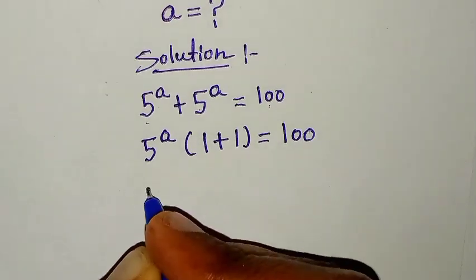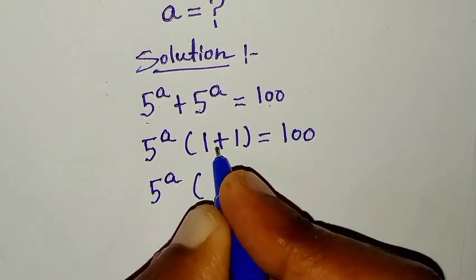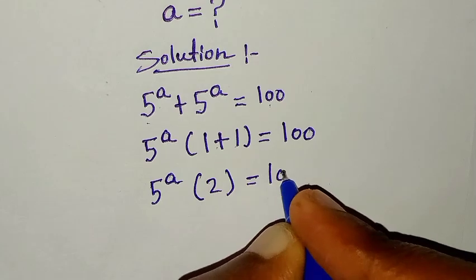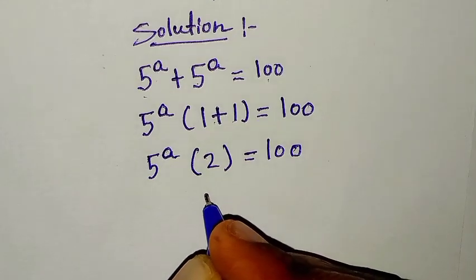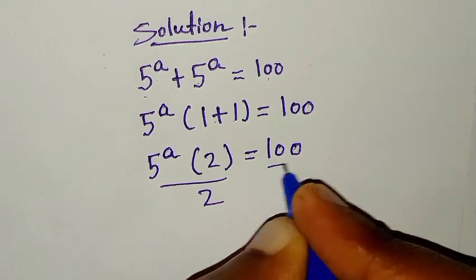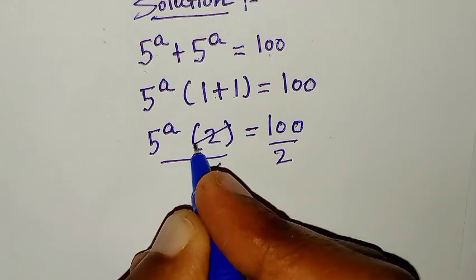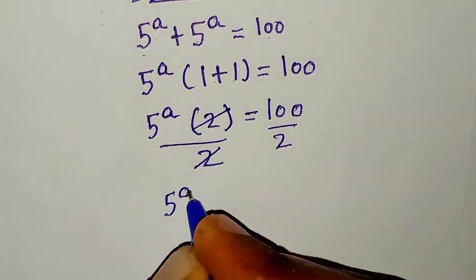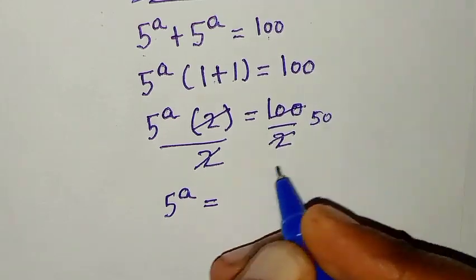Then it will be 5 to the power of a times 1 plus 1, which is 2. Then in the next step, we will divide by 2 on both sides. This and this will cancel. Then it will be 5 to the power of a is equal to 100 divided by 2, which is 50.